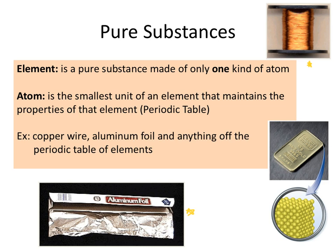You also have substances that you might not actually see but do interact with that are pure substances — specifically elements. N2 and O2 are both components of the air that you breathe. Hydrogen gas would be another example of an element that you would characterize as a pure substance. These are all various substances that fall into the element subcategory of pure substances.